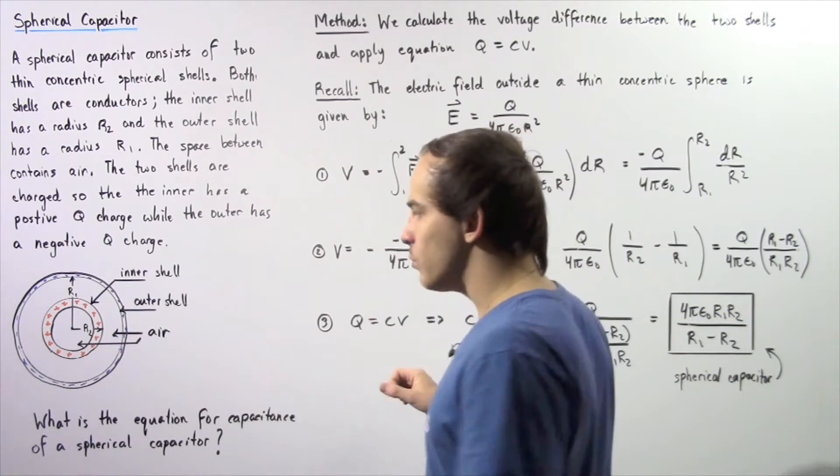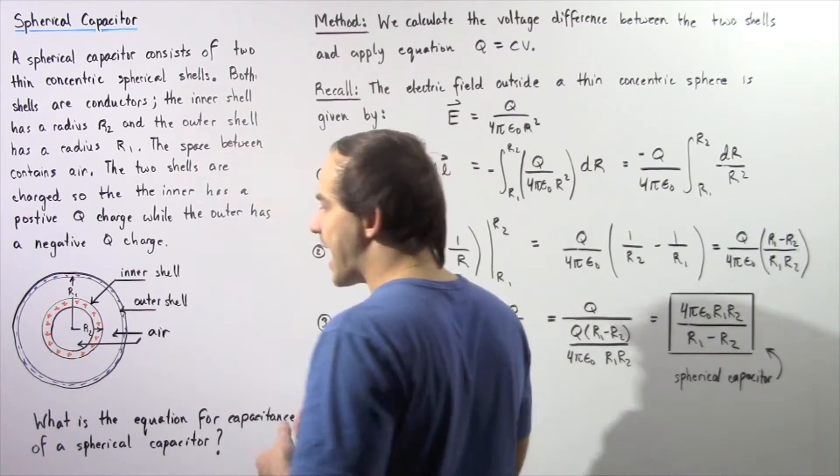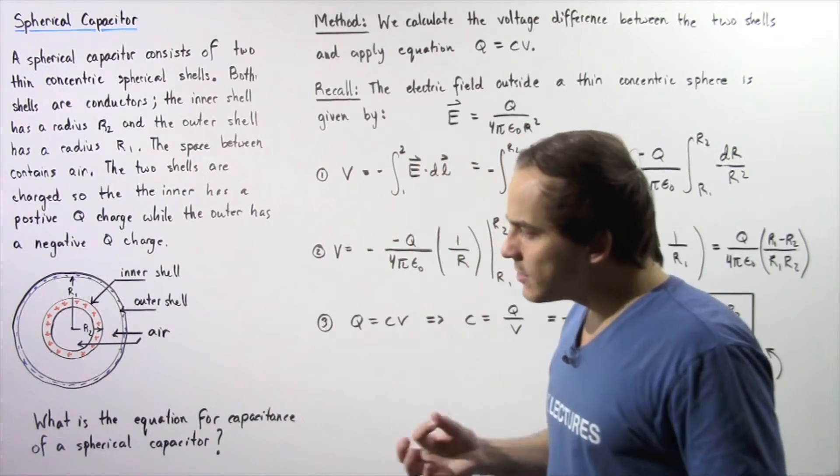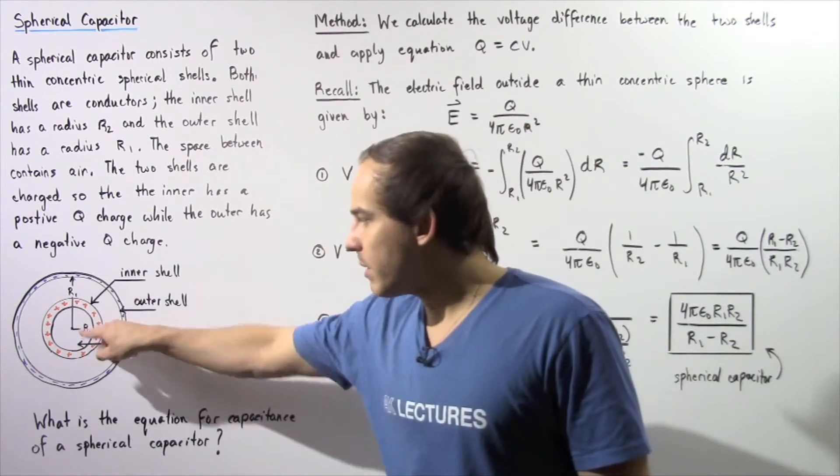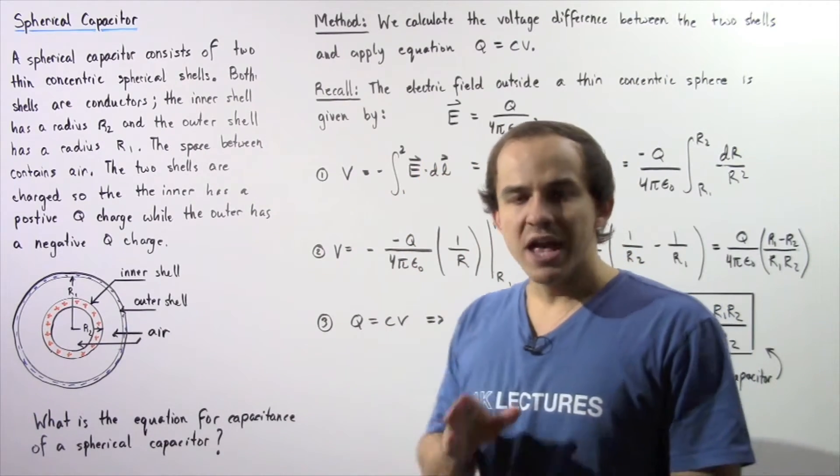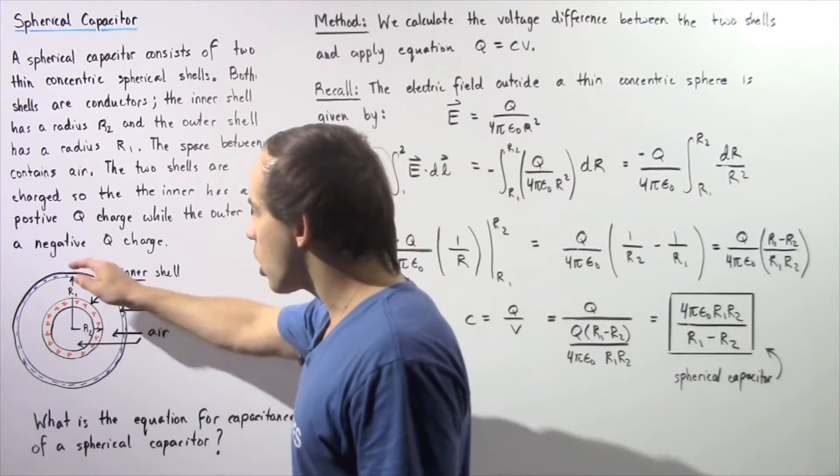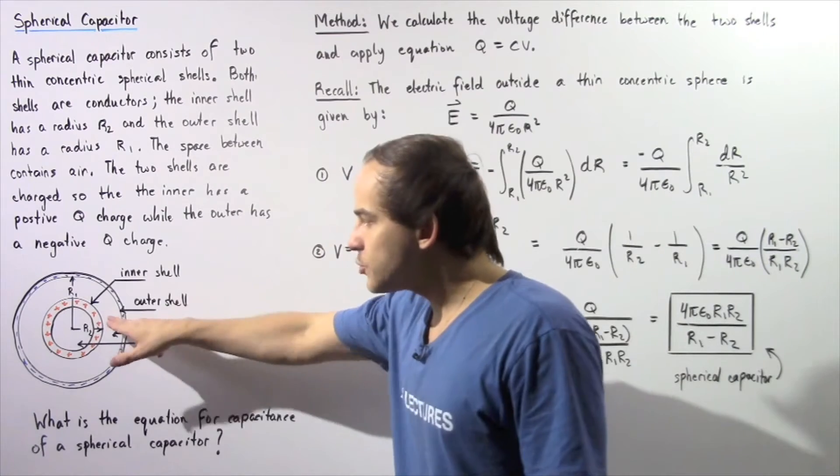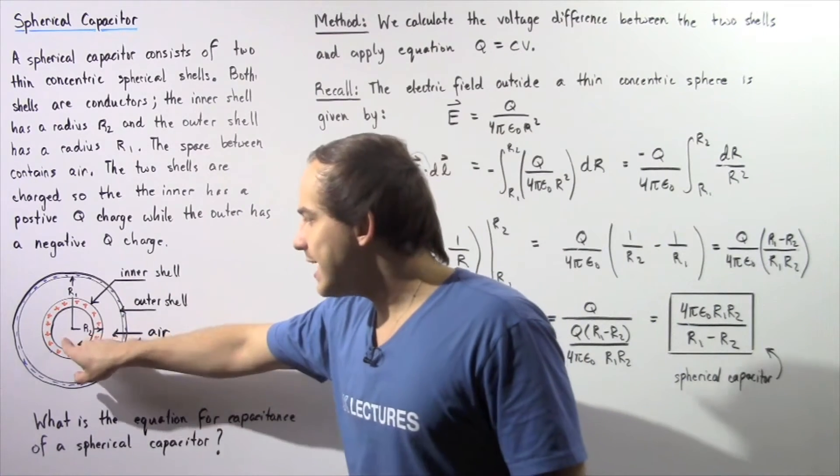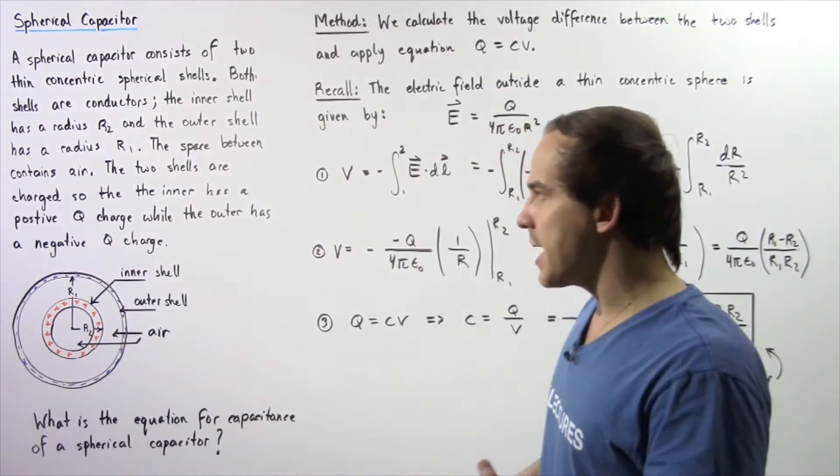As shown in the following diagram, we have the inner shell and the outer shell. The inner shell has a radius given by R2 and the outer shell has a radius given by R1. The space between our two shells contains air and this inner region also contains air.